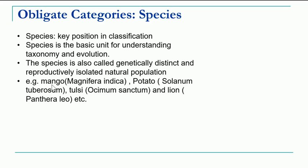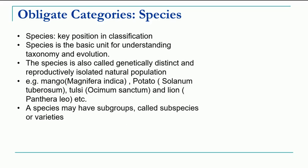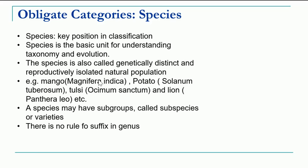Some examples of species: in plants, Mangifera indica for mango and Solanum tuberosum for potato. In animals, the species name for lion is leo. Species can be further classified into subgroups called subspecies or varieties — nowadays we do not use varieties but use the terminology subspecies. There is no rule of suffix for species.